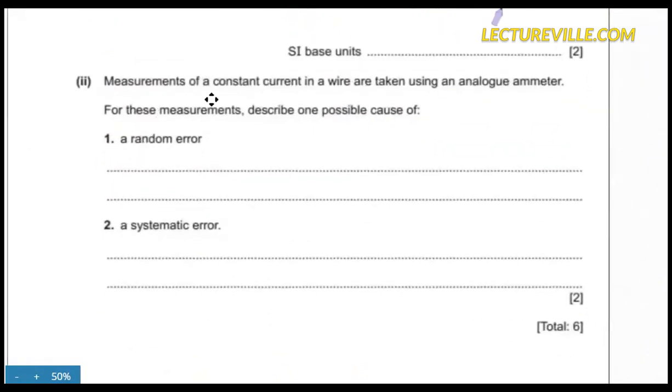Measurements of a constant current in a wire are taken using an analog ammeter. For these measurements, describe one possible cause of a random error and a systematic error.